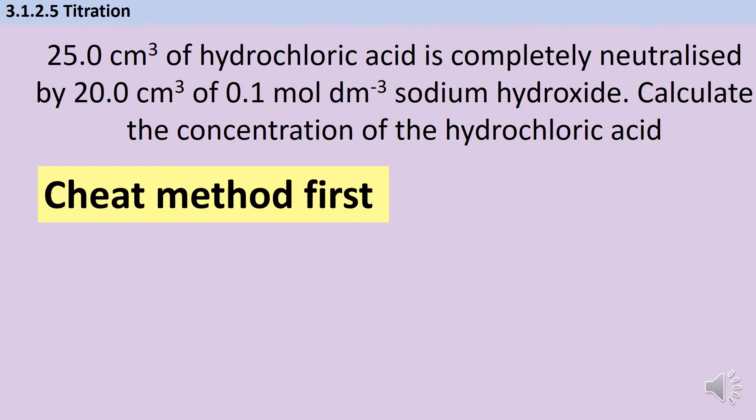Titration is quite hard to discuss just hypothetically, so we're going to go straight into a calculation and we're going to look at two methods. Firstly, a cheat's method and then a full-length method.